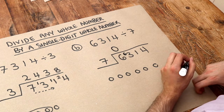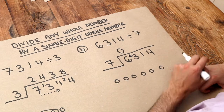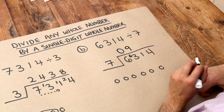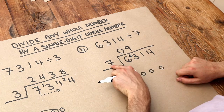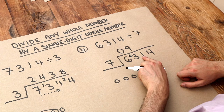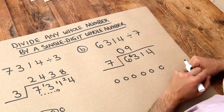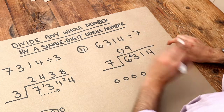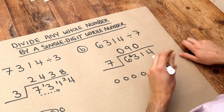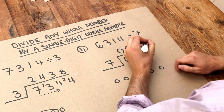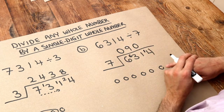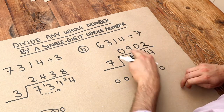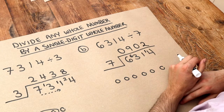We repeat the process. How many times does seven go into 63? It goes in nine whole times without any remainder, so we don't need to write a remainder here. How many times does seven go into one? If we have one sweet and want to share between seven people, not enough — it's zero whole times, but we still have that remainder of one. And finally, seven goes into 14 two whole times. That's our final answer: 902.